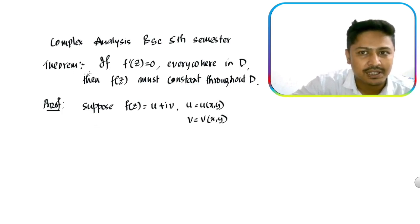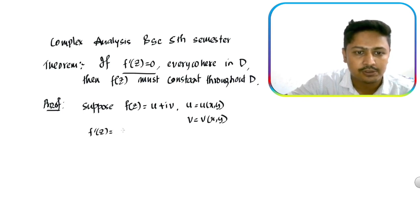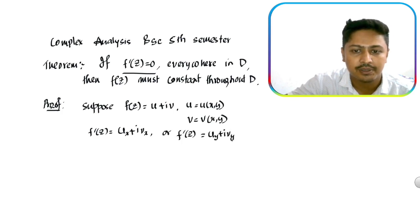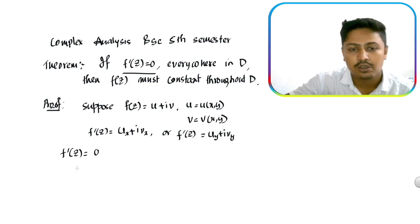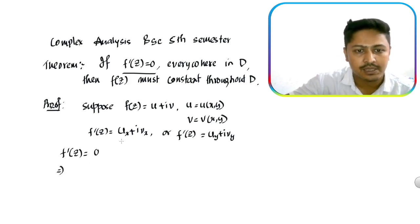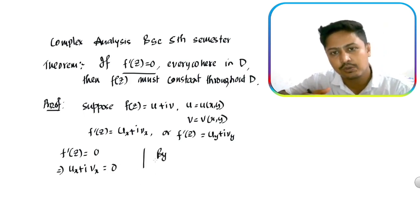So f(z) equal to u plus iota v, where u is a function of x and y, and v is again a function of two variables. So f'(z) equal to zero means that ux plus iota vx will be equal to zero, or we can write u_y plus iota v_y equal to zero. From here, ux plus iota vx equal to zero.